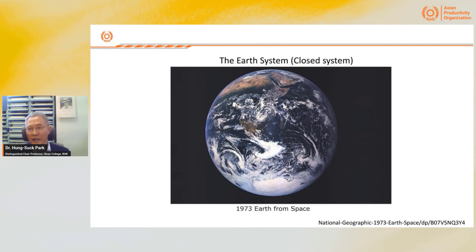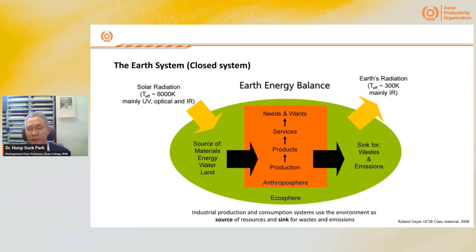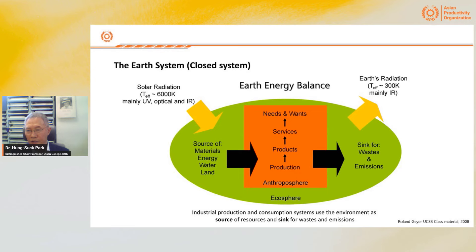This figure shows you the only Earth taken from space. The Earth is a closed system — materials and energy can transfer to the Earth, but material cannot be transferred outside. This is the energy balance of our system. The Earth system is operated by solar radiation — mainly UV, optical, and infrared. The radiation comes through the ecosphere, and the anthroposphere utilizes this energy to produce products and services.